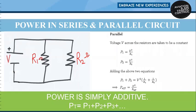In the parallel example, we have a voltage source with two resistances R1 and R2 connected in parallel. Power P1 across R1 equals V squared divided by R1. Power P2 across R2 equals V squared divided by R2. Adding P1 and P2 gives V squared times (1/R1 + 1/R2). Since 1/R1 + 1/R2 equals 1/R effective in a parallel circuit, power effective equals V squared divided by R effective.